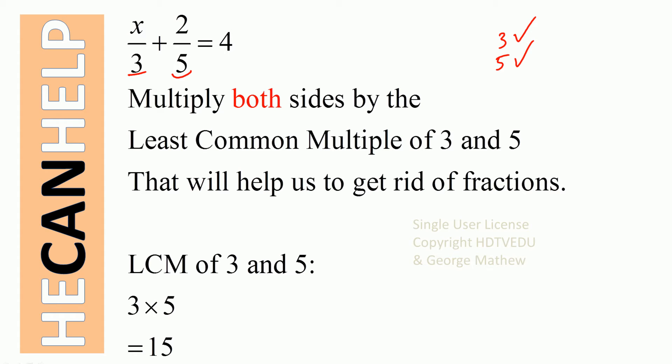What is the least common multiple of two prime numbers? It is 3 times 5, so it is 15. Multiply both sides by 15.